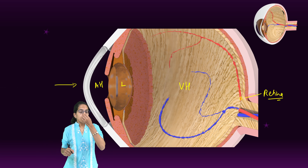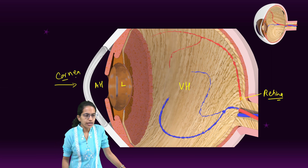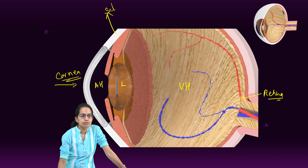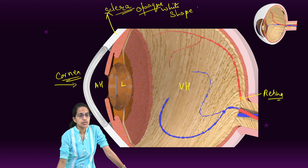So what happens is retinene dissociates. Now when retinene dissociates from opsin, there is transducin which activates. Now when transducin activates, the potential generated in photoreceptor cells triggers the action potential in the ganglion cells.